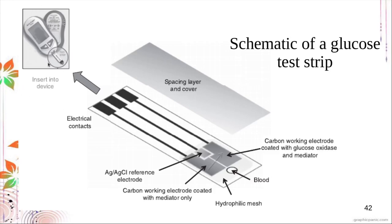Here is your glucose testing strip — the disposable test strip used with the reading device. You place blood at one end; the electrical contact connects to the device. The blood flows to the working electrode region. Because it is electrochemical, you have electrodes including a silver-silver chloride reference electrode for measuring the electrical signal produced. The strip is actually quite small and very thin.